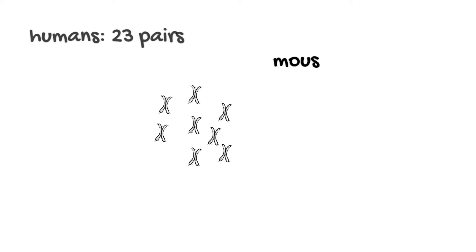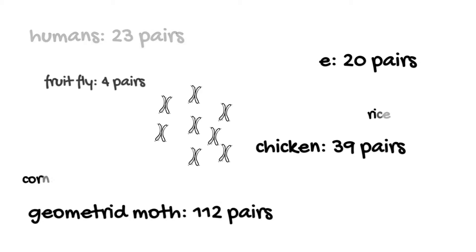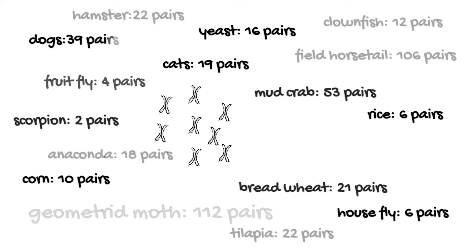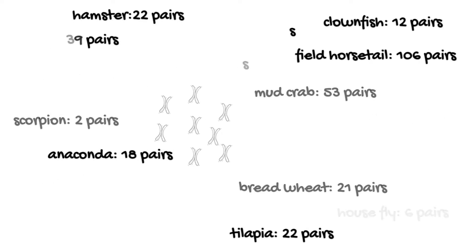To do this, let us first establish some rules or regularities in the genetic content of living things across different species. First, the nucleus of all somatic cells in an organism contains a fixed number of chromosomes. The numbers vary among species but bear little relation to the complexity of the organism — consider that a moth has more chromosomes than us, and that a scorpion has fewer chromosomes than a fruit fly.